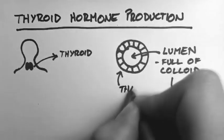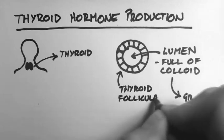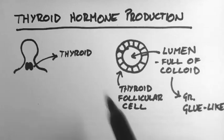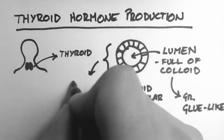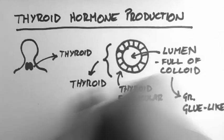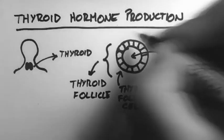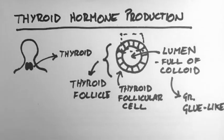These cells around the outside are called thyroid follicular cells, and this whole apparatus is called a thyroid follicle. I'm going to take a section through here and blow it up.